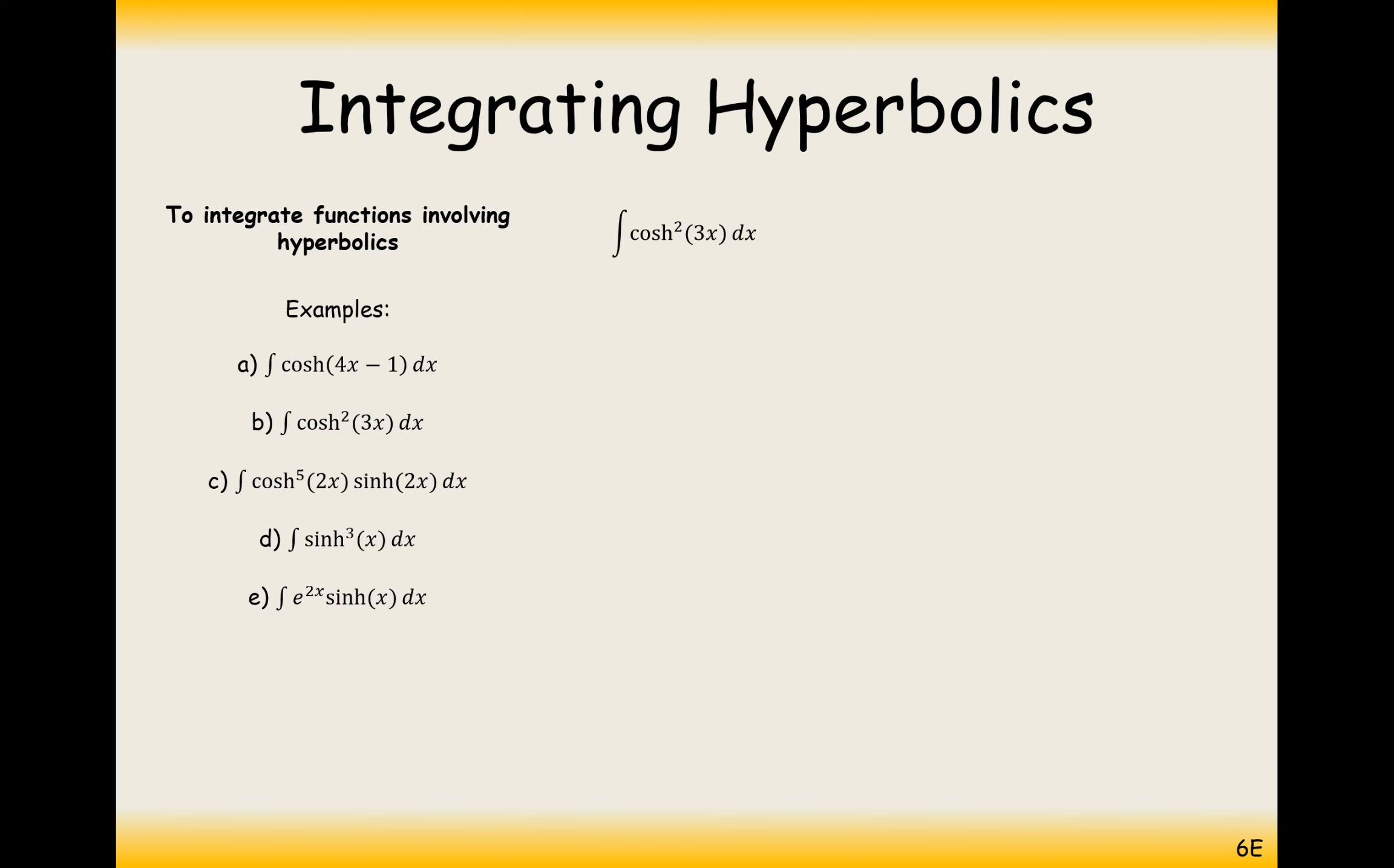The second one, integral of cosh squared 3x. You'd use an identity, a cosh double angle identity. The cosh double angle identity is 2 cosh squared minus 1, so add the one to the other side and half both sides. It's cosh squared 3x in the question, so I'll multiply the angles by 3, and now I've got half cosh 6x plus 1 as my identity.